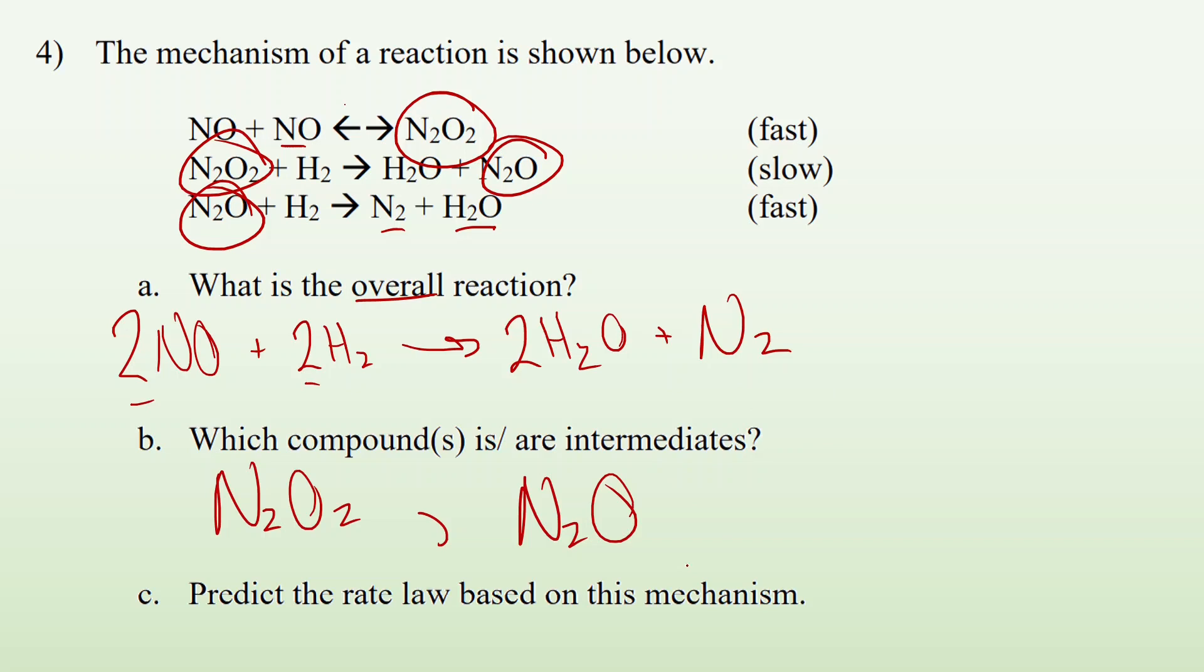Now, it says predict the rate law based on this mechanism. So we know that the second step is the slow step. So the rate is going to be determined based on that. The rate is going to equal K times N2O2 times H2. But, hey, wait a minute. This N2O2 is an intermediate. I can't have that. So I want to look to the first step. I got this double arrow, which means that the rate of the forward and the rate of the reverse are equal. So the rate has to equal some K times NO squared, which has to equal K for the reverse reaction times N2O2. So divide each side by K to the minus 1. It's just a number.